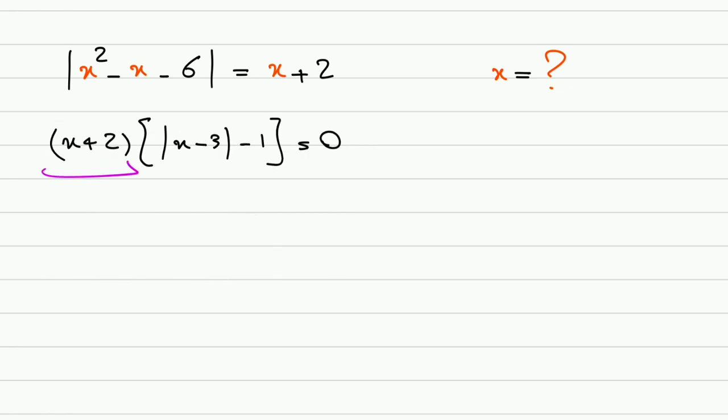So this is the first case. x plus 2 is 0 and x is negative 2. That's the first answer.